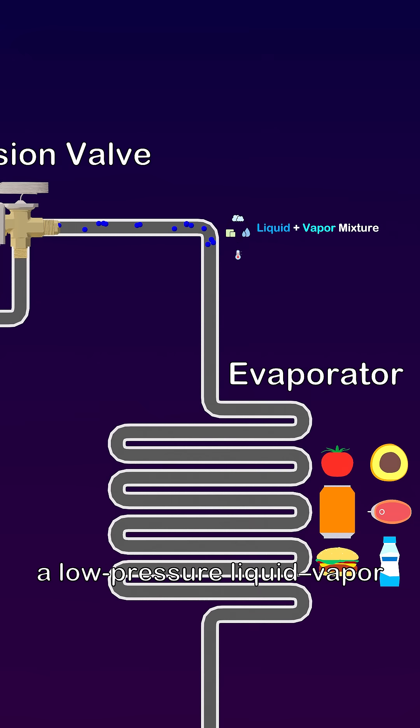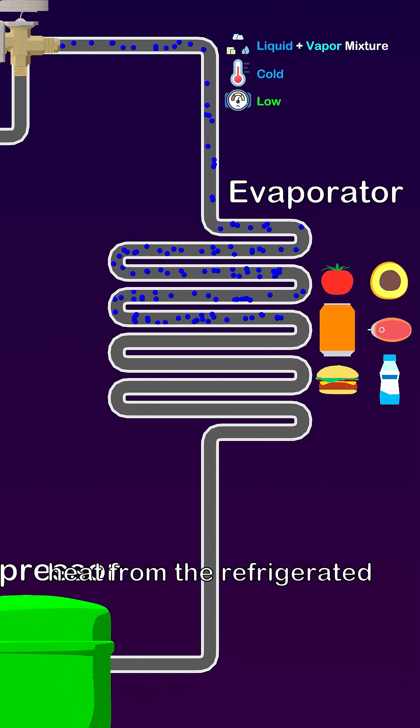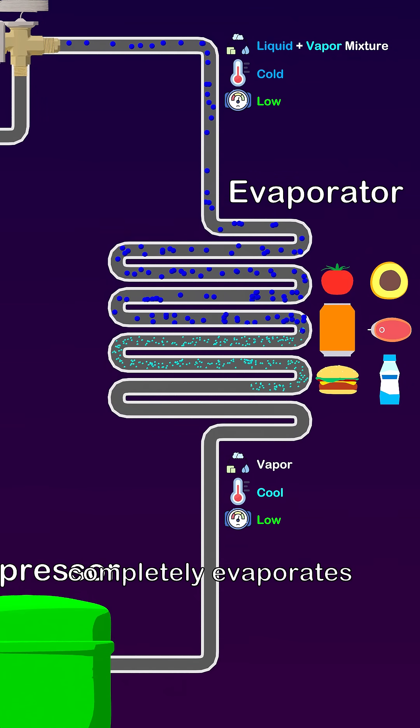The cycle begins as a low pressure liquid vapor mixture enters the evaporator. Here, the refrigerant absorbs heat from the refrigerated space and completely evaporates.